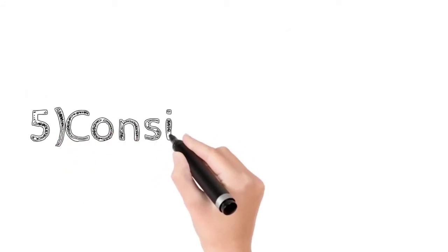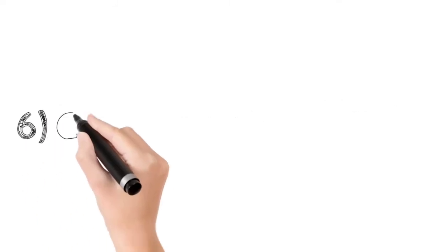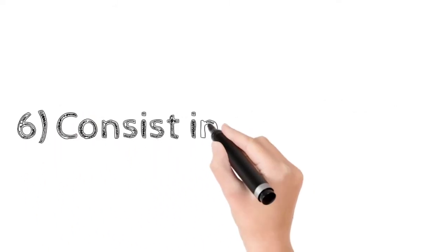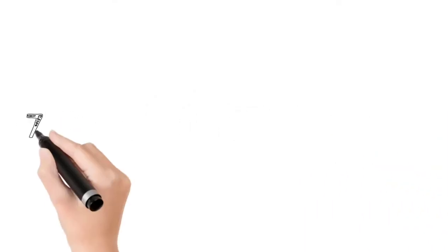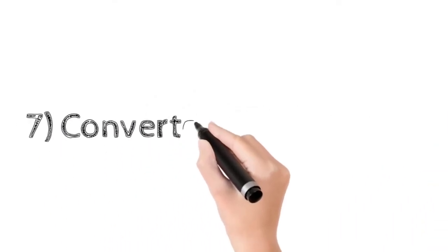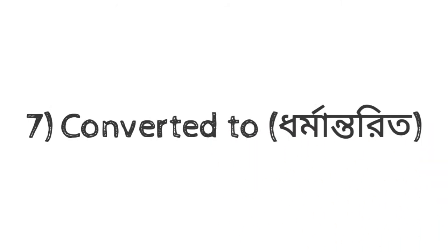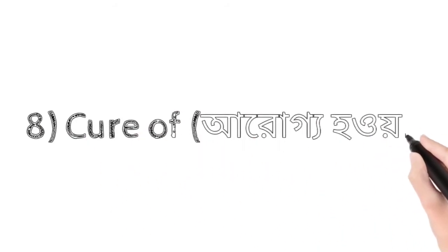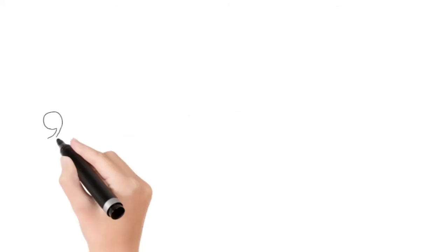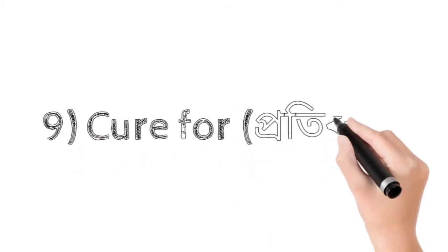Five: Consist of - jar Bangla gothito. Six: Consist in - jar Bangla nihito hoa. Seven: Converted to - jar Bangla dharman torito. Eight: Cure of - jar Bangla arogo hoa. Nine: Cure for - jar Bangla pratikar.